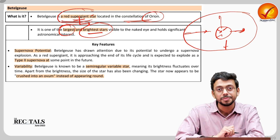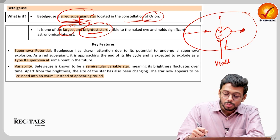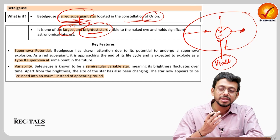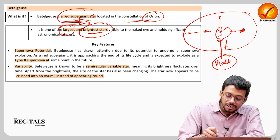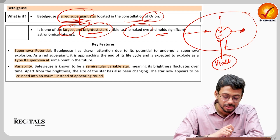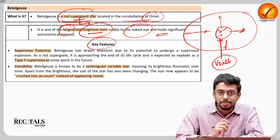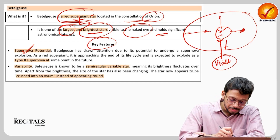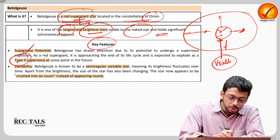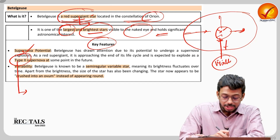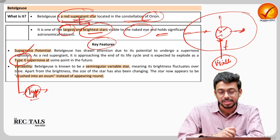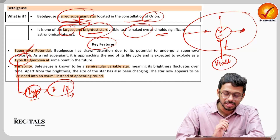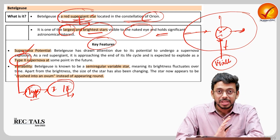Since Betelgeuse is very bright, it becomes easier to study. We can understand what is happening in the universe and answer various questions. It can even be seen with the naked eye, which is why it holds importance. Its key features include supernova potential — it might go through a supernova explosion, and it will be a Type 2 supernova, which is something we have not discussed earlier. There are various types of supernova: Type 1 and Type 2, with certain subtypes of Type 2 as well.